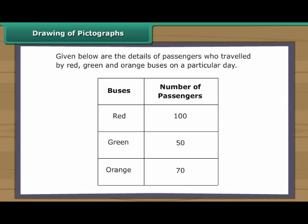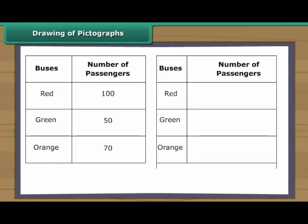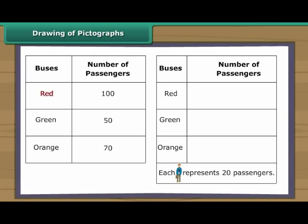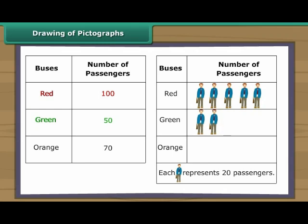Drawing of pictographs. Let us now draw a pictograph with the help of the given data. Let us use the picture of a travelling man to represent the bus passengers. As the numbers are large, we use one picture to represent 20 passengers. The red bus carried 100 passengers; five pictures will represent 100 passengers. The green bus carried 50 passengers: represent 40 passengers with two pictures and the remaining 10 passengers with half a picture. The orange bus carried 70 passengers: represent 60 passengers with three pictures and the remaining 10 passengers with half a picture.